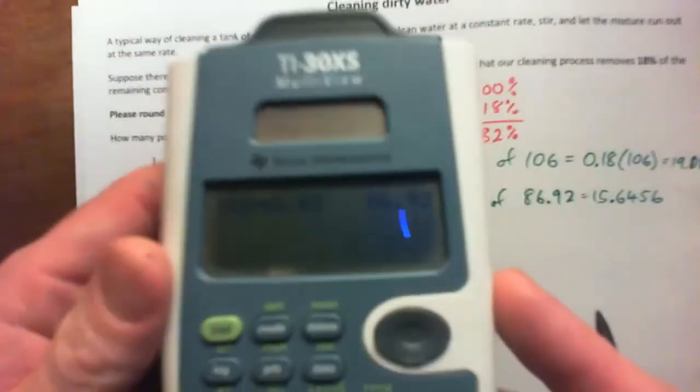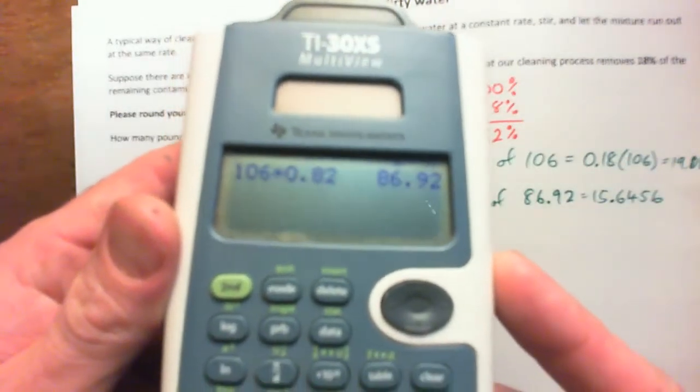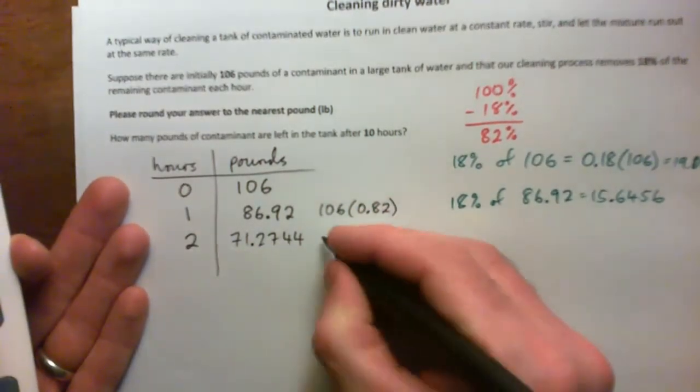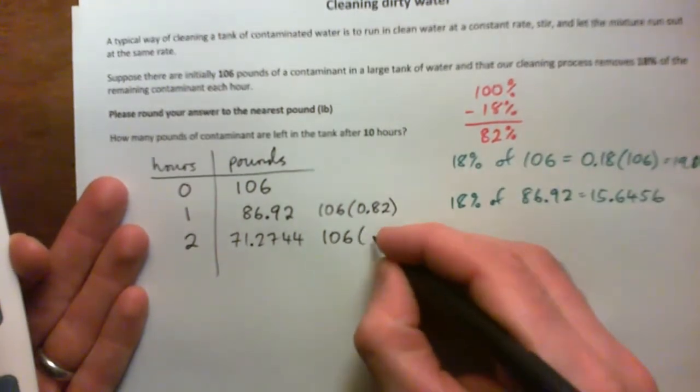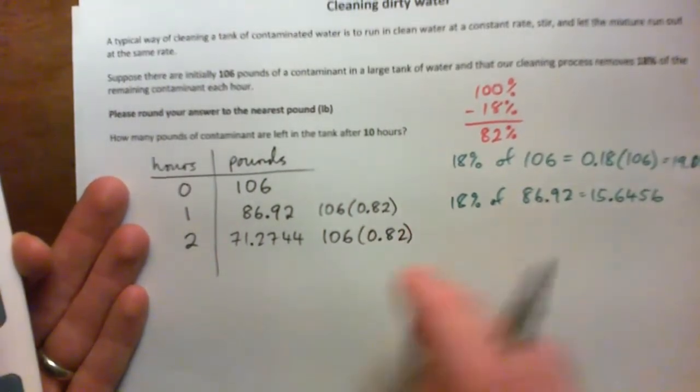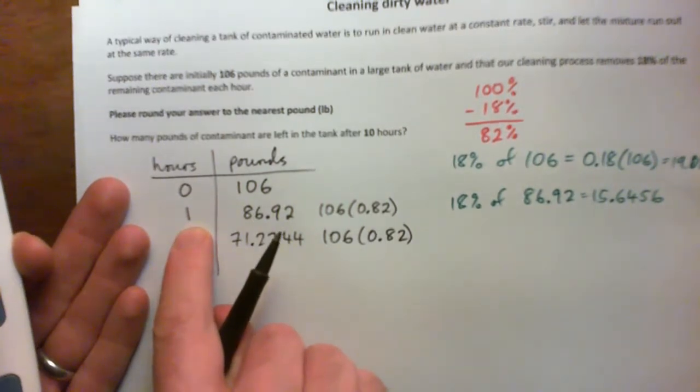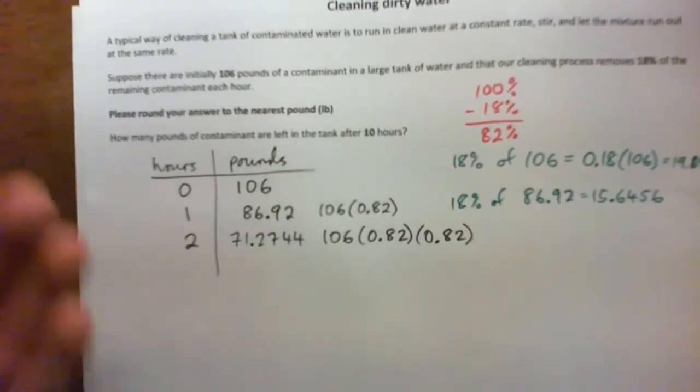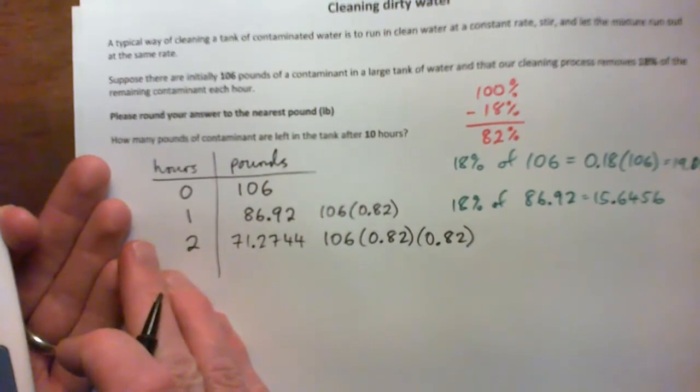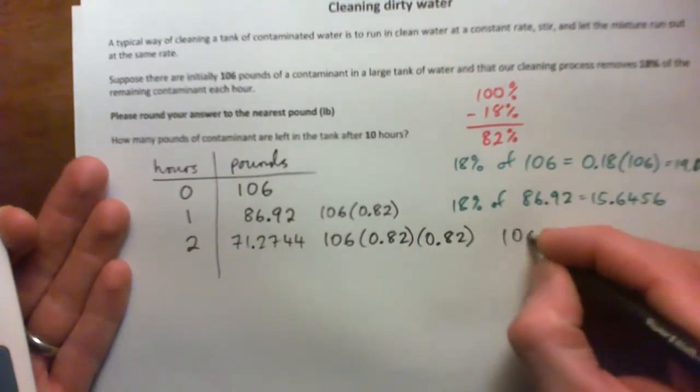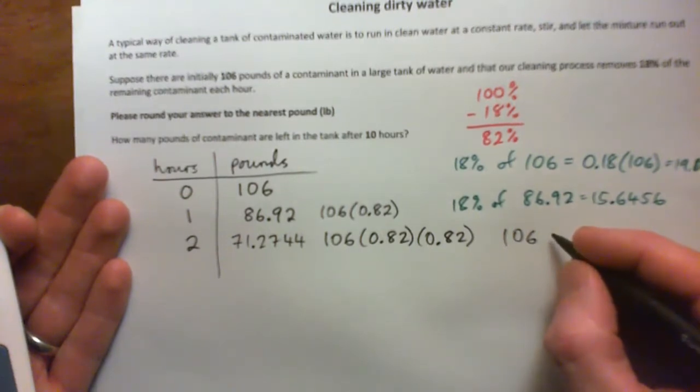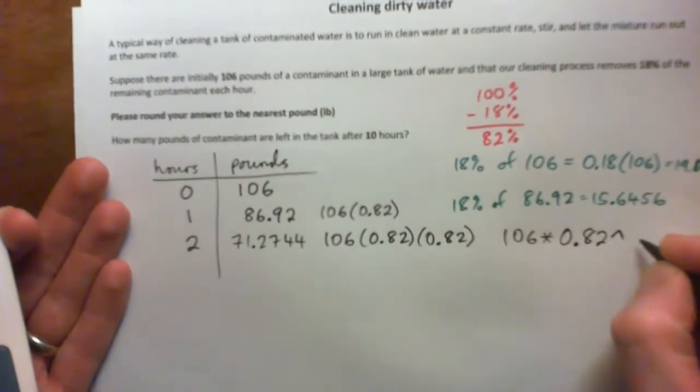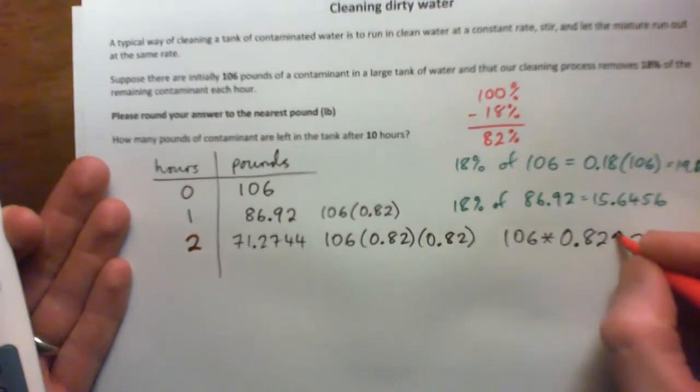And after two hours, I can go 106 pounds. I start with 106 pounds and then I get 82% of that to see what's remaining after one hour. But I multiply by 0.82 again to see what's remaining after two hours. Or in other words, it's 106 times 0.82 to the power of two. So after two hours, it's this to the power of two.